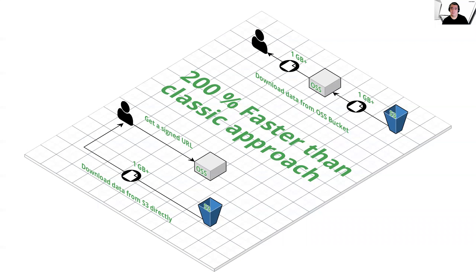What are we suggesting now? A direct download from S3 that will bypass the second layer of access and allow us to obtain files faster. In recent tests, we saw an improvement of an average of 200% faster downloads for these large files, compared to the classic approach of direct access to the OSS. The way it works is that we request a pre-signed URL to directly request the download from S3, as shown in this diagram.